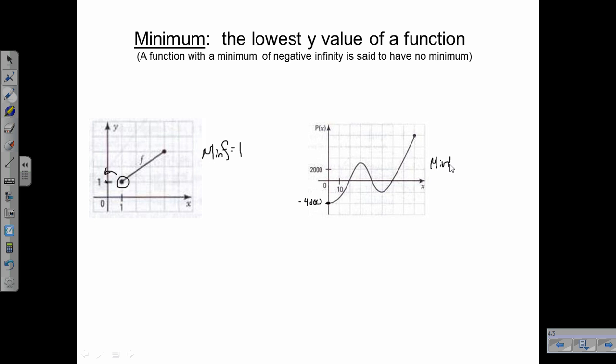Our minimum of function p equals negative four thousand. So it never goes below negative four thousand.